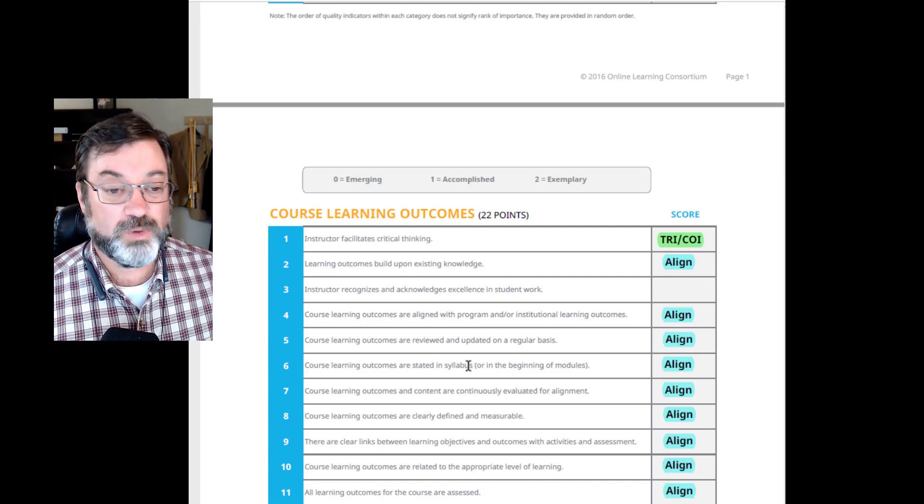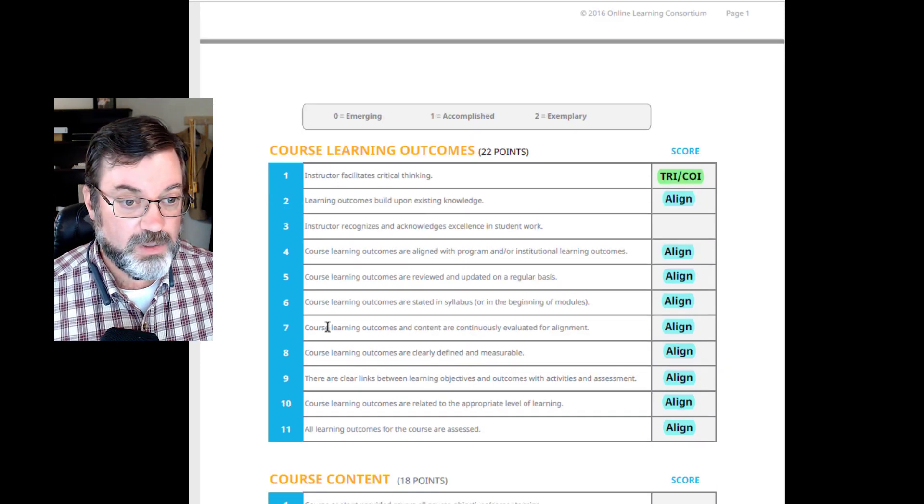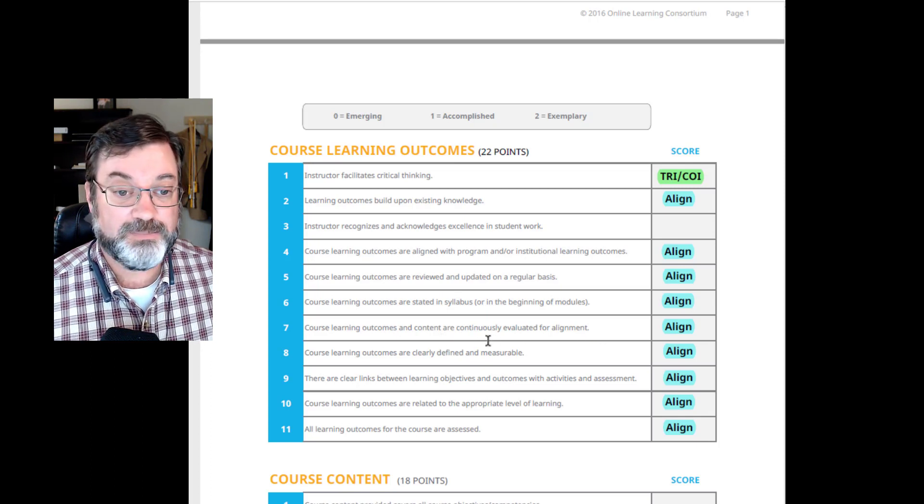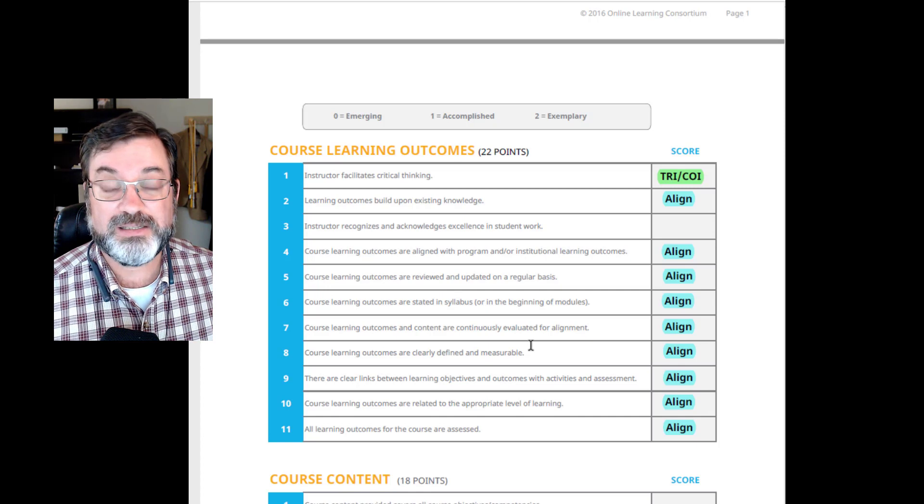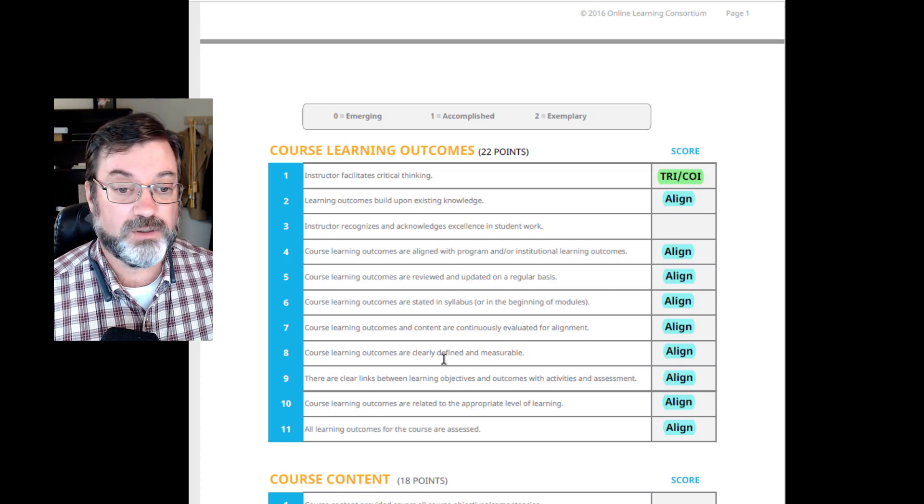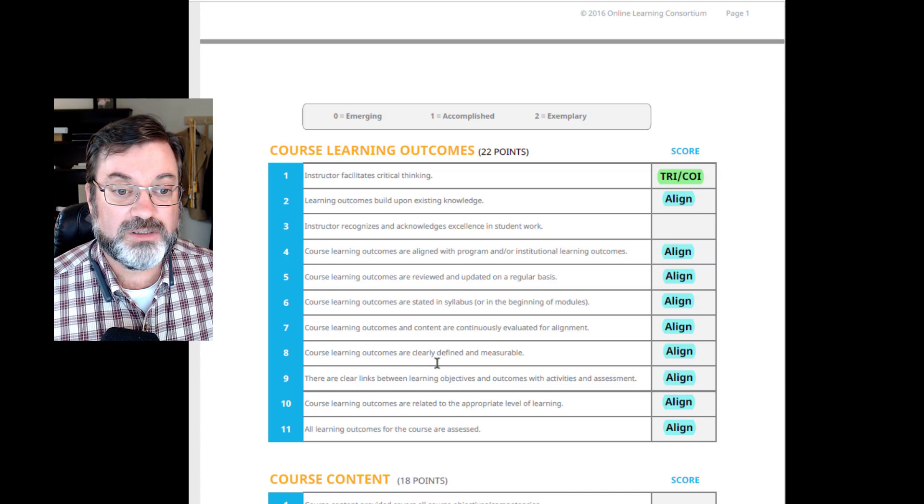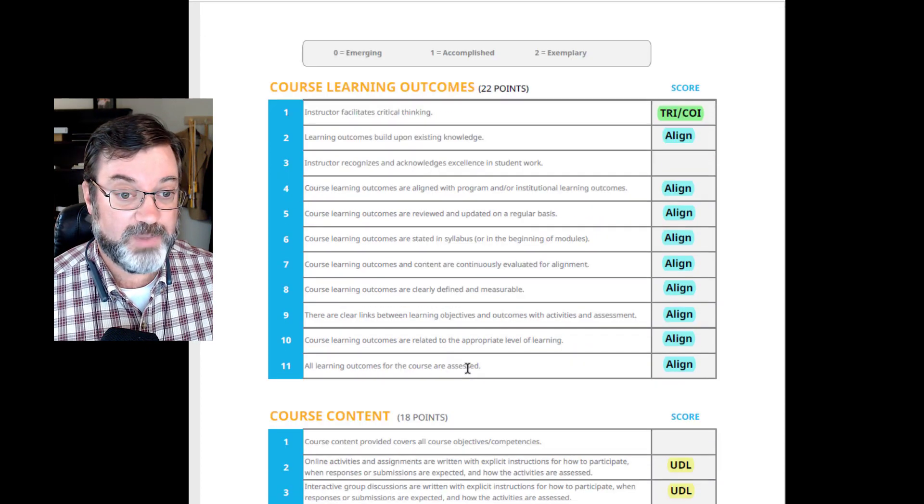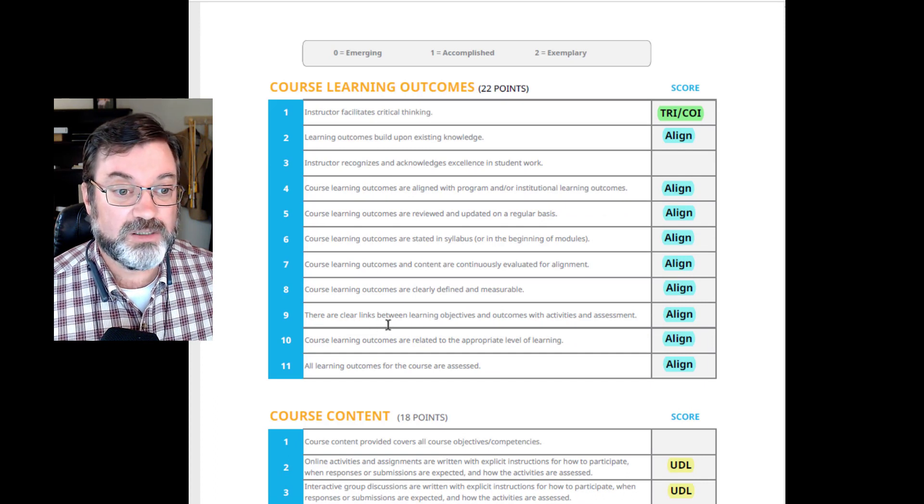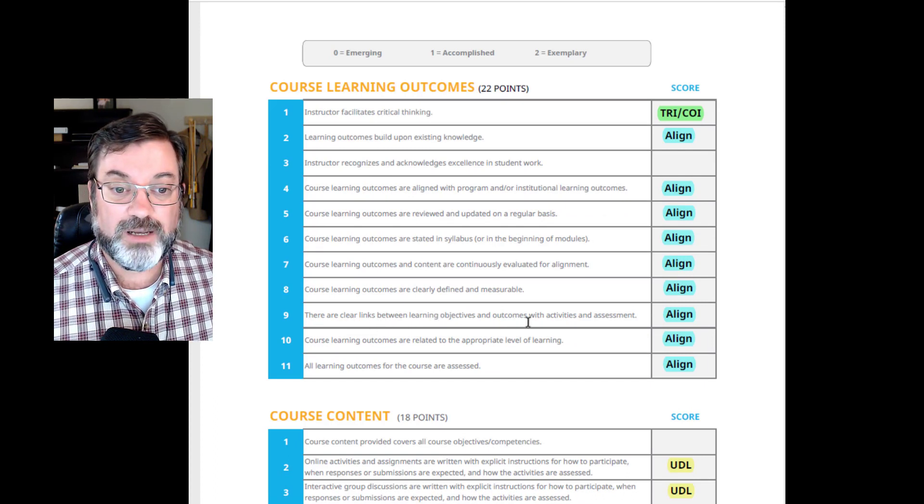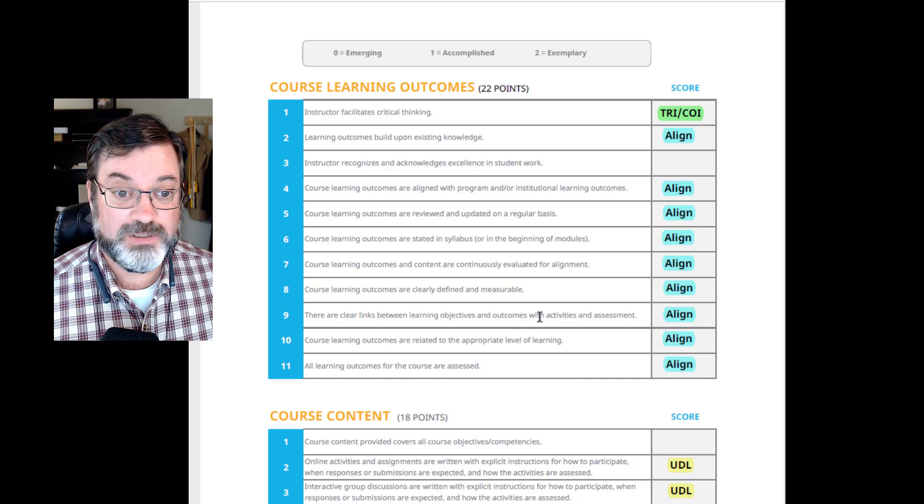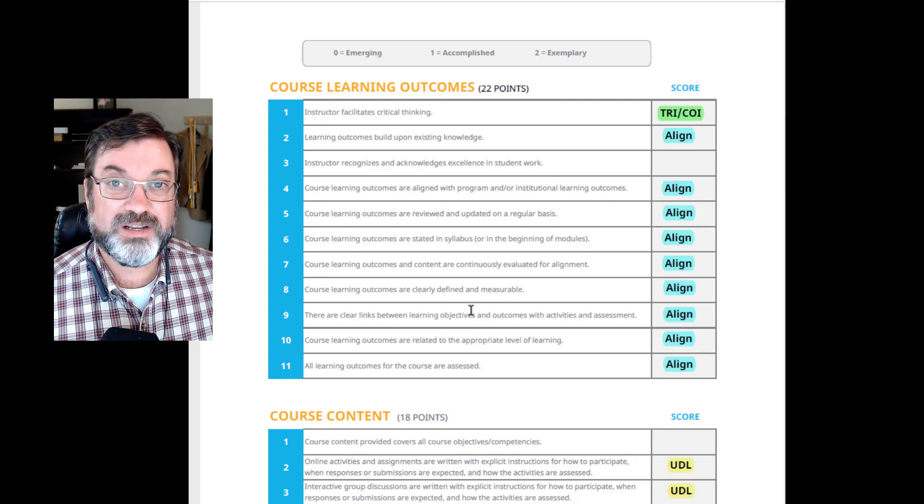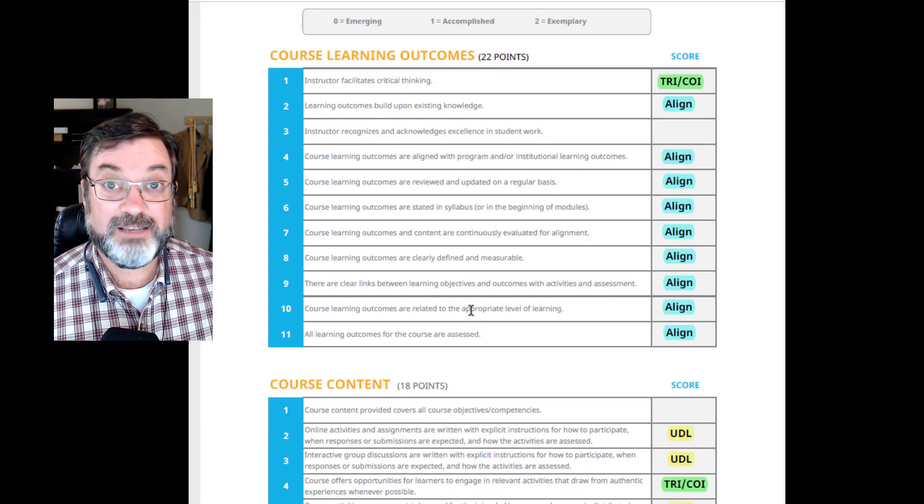Course learning outcomes and content are continuously evaluated for alignment. Make sure that all the assignments make sense and they are progressing towards a course learning objective. Course learning outcomes are clearly defined and measurable—that's all about how you write them and how you're going to assess them. There are clear links between learning objectives and outcomes with activities and assessment. The students want to know that what they're doing is for a purpose, so you want to state that purpose explicitly if you can.